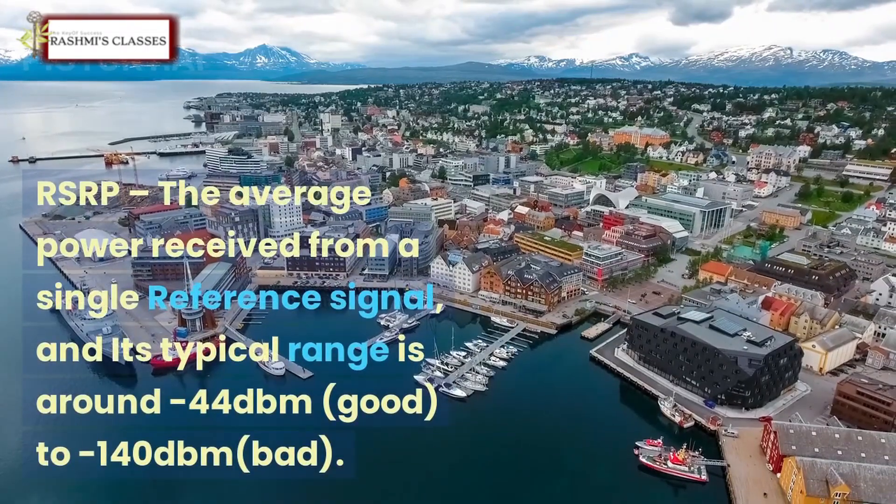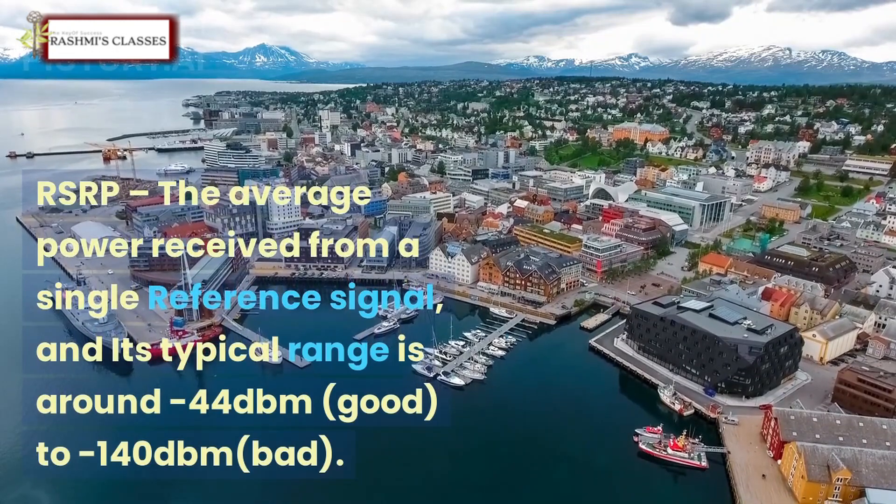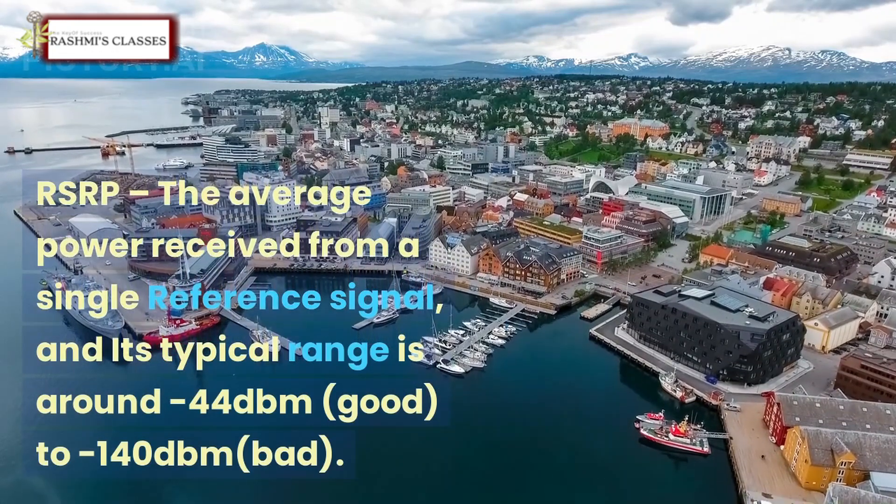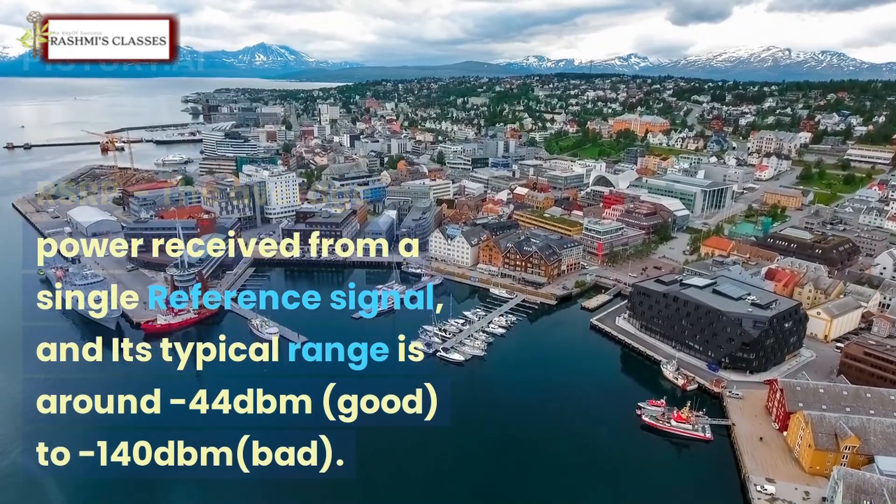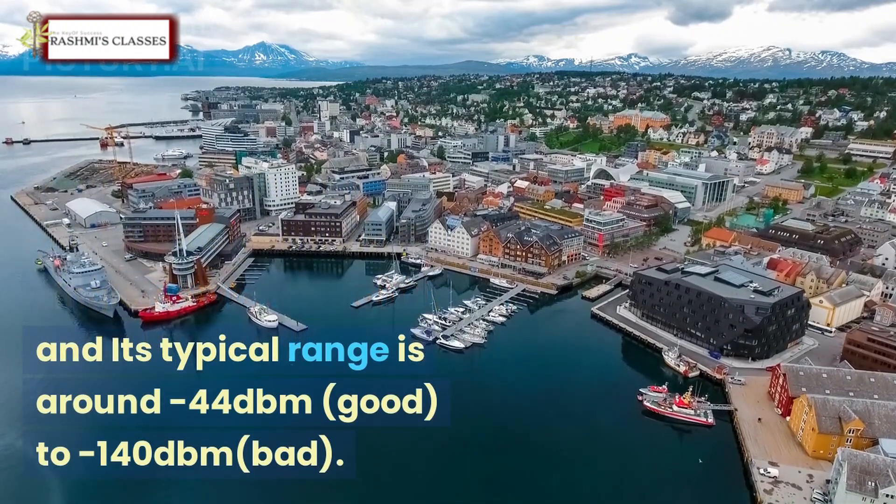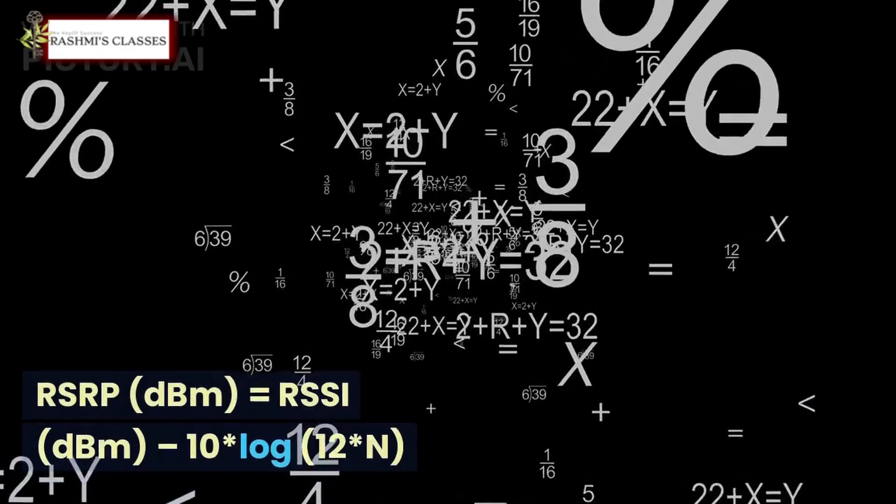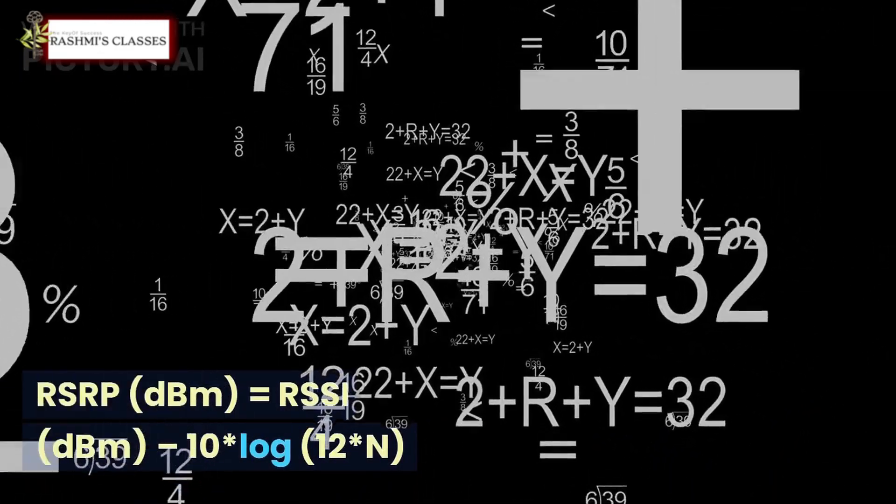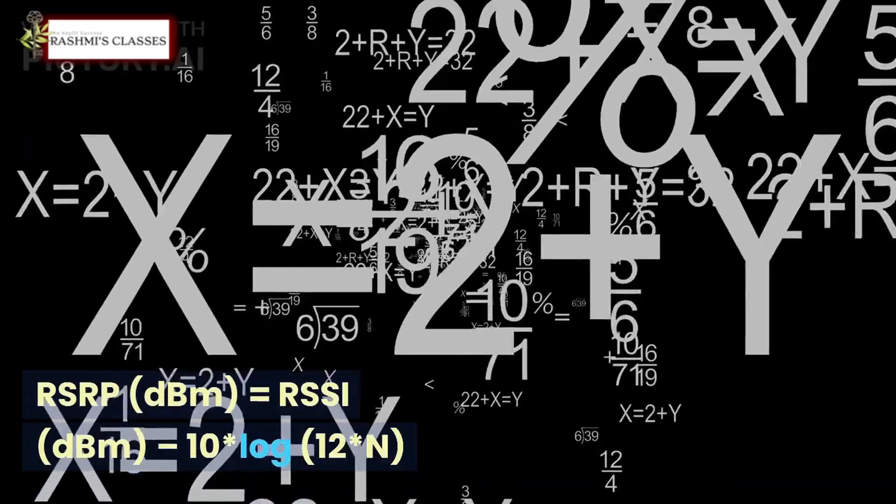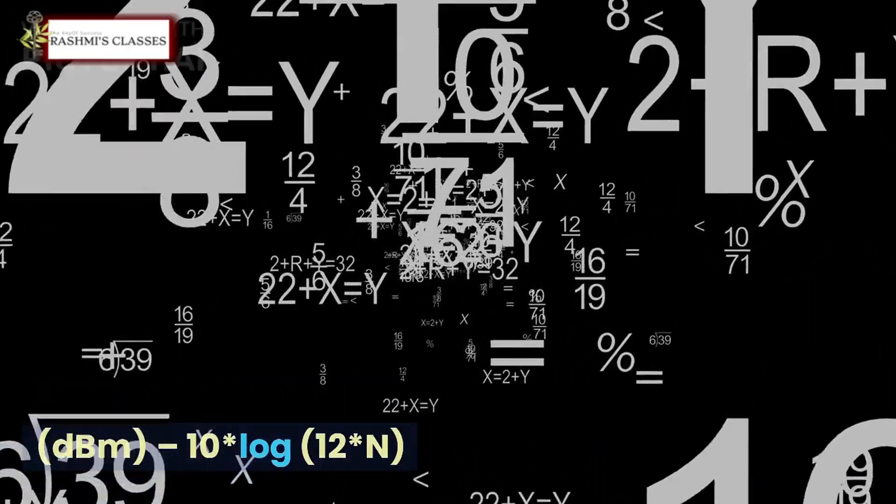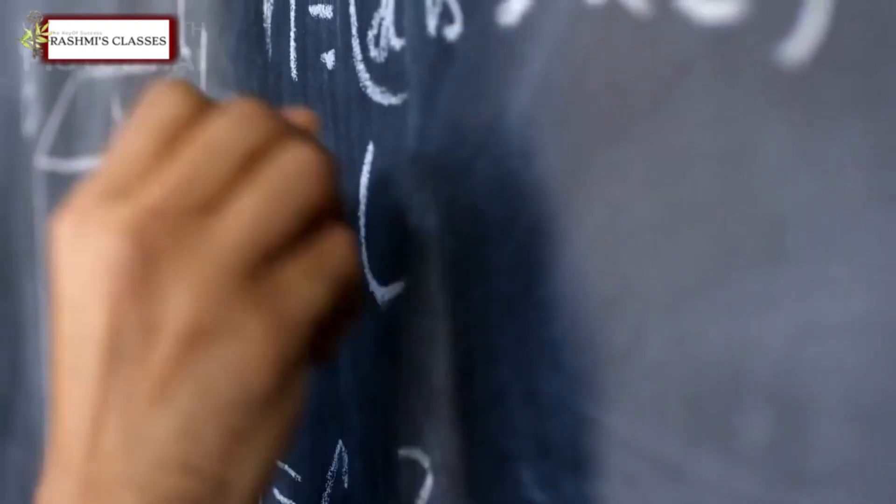1. RSRP: The average power received from a single reference signal, and its typical range is around -44 dBm (good) to -140 dBm (bad). RSRP (dBm) = RSSI (dBm) - 10*log(12*N).